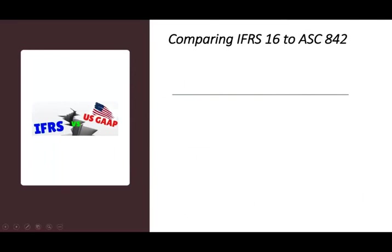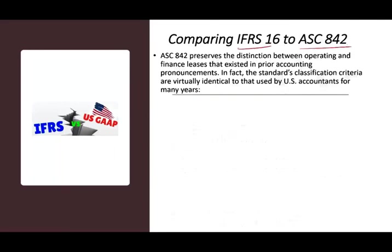Now let's compare IFRS 16 to ASC 842, the US standard. ASC 842 preserved the distinction between operating and financing leases. So under the US standard we still have an operating lease category; however, even for operating leases, we do record an asset and a liability initially — although it's still called an operating lease.